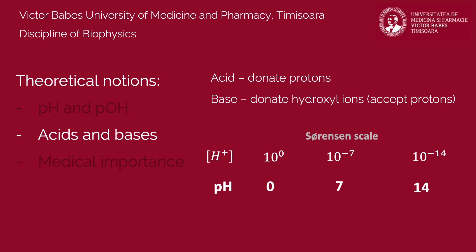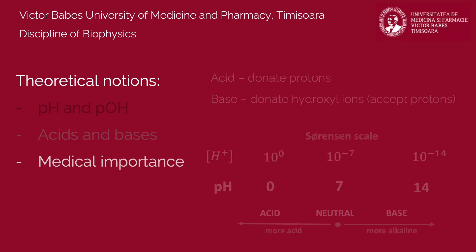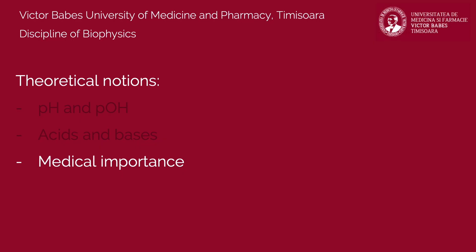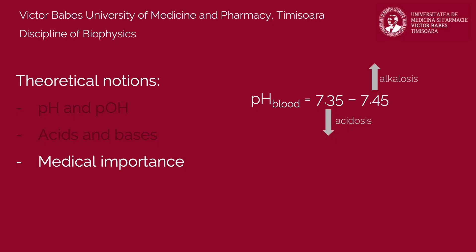According to the Sorensen scale, solutions can be characterized as neutral when their pH is equal to 7, acidic when their pH is lower than 7, or basic when their pH is larger than 7. Numerous pathological conditions are consequences of pH imbalances of biological liquids. Sustaining appropriate pH levels is critical in maintaining homeostasis of living organisms. Metabolic processes depend on the activity of enzymes, which is optimal only in narrow ranges of pH. For example, human blood is weakly alkaline, with a pH in the range 7.35 to 7.45. Higher or lower values of blood pH are known as alkalosis or acidosis, both conditions being incompatible with life.